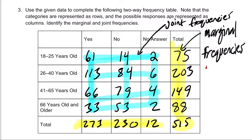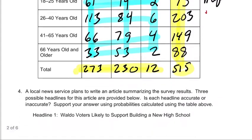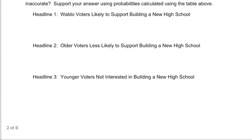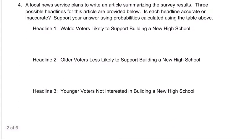And now what we have is a two-way table. It's two ways because the first way reads as age or yes, no, what their choice is in the vote. Okay. Now we scroll down. Question four is, a local news service plans to write an article summarizing the survey results. Three possible headlines for this article are provided below. Is each headline accurate or inaccurate? Support your answer using probabilities calculated using the table above. So try it out and then press play when you're ready to solve it with me.